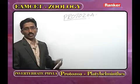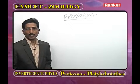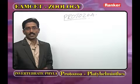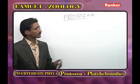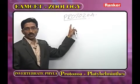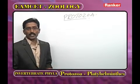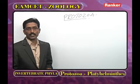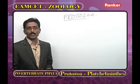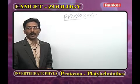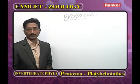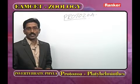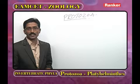What are the characters of Protozoa and how is it classified? The important character of Protozoa is unicellular nature. The body is made by one cell. The other name of unicellular organisms is acellular organisms.